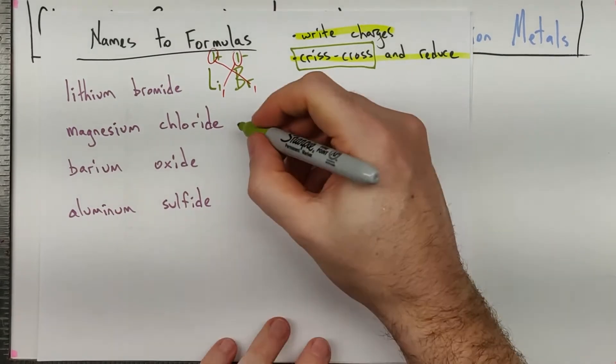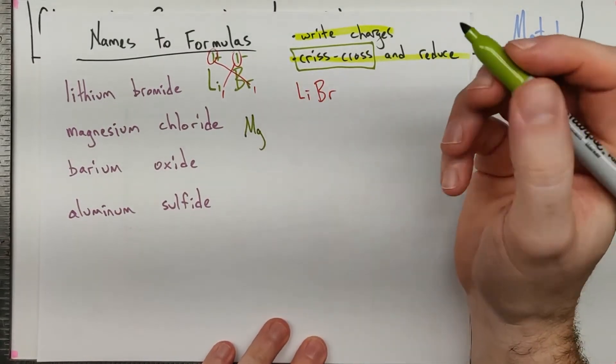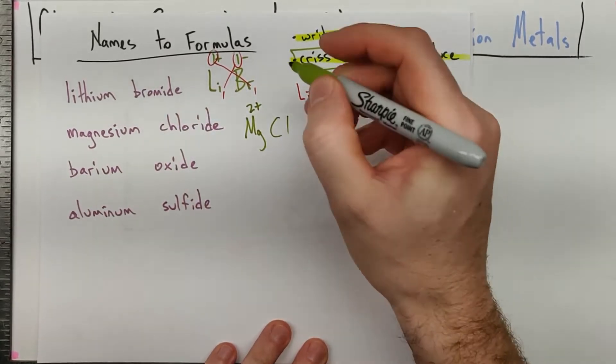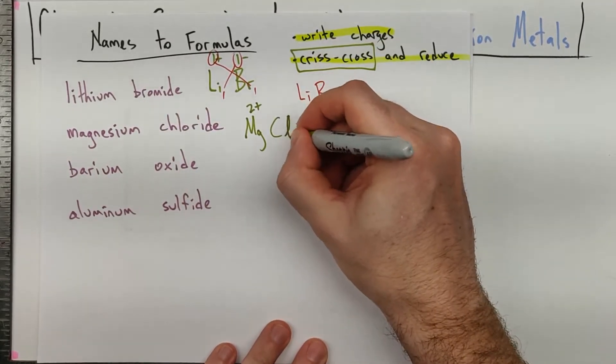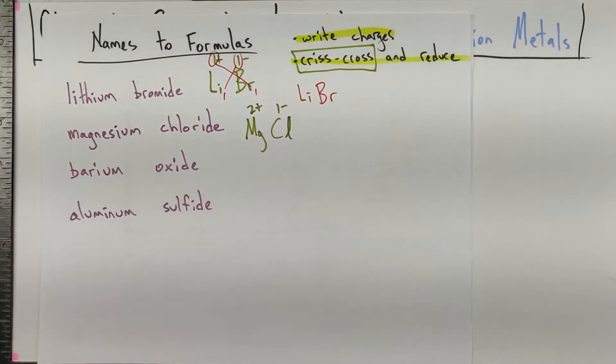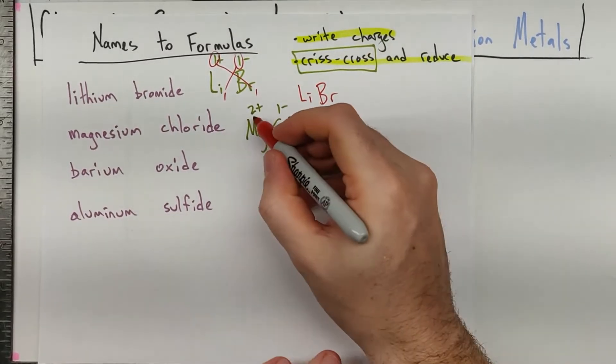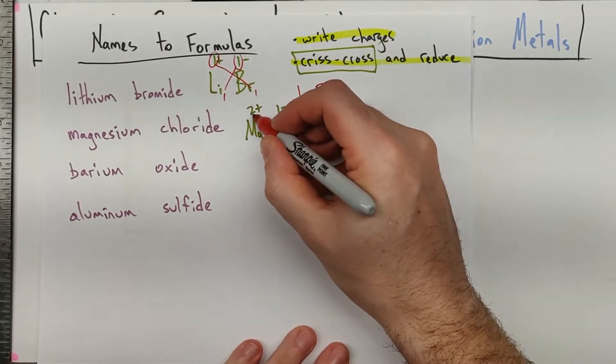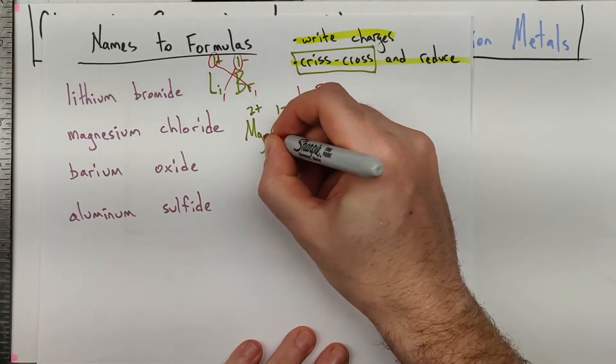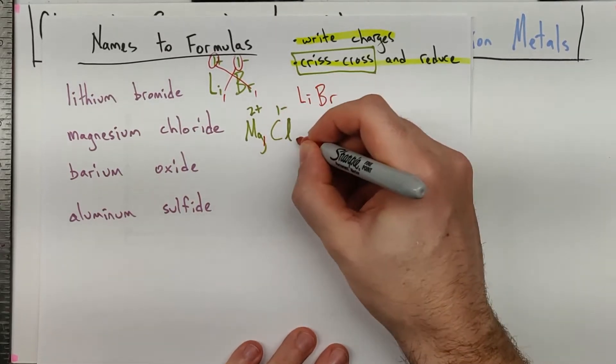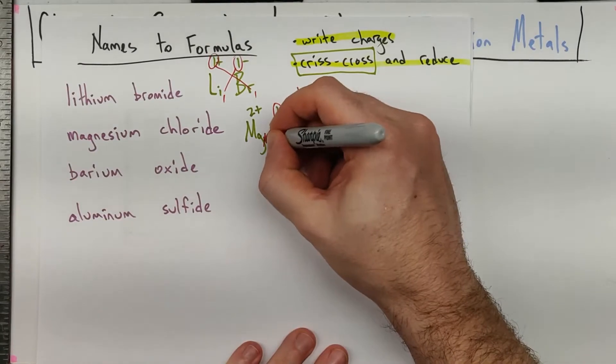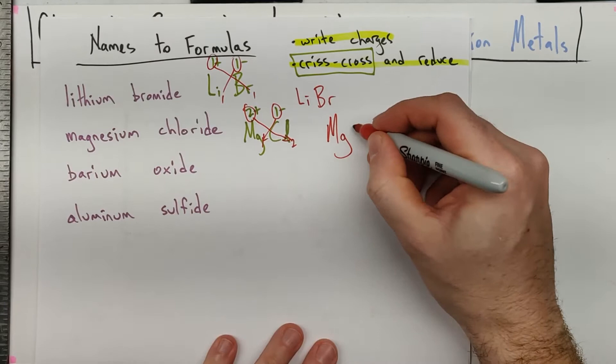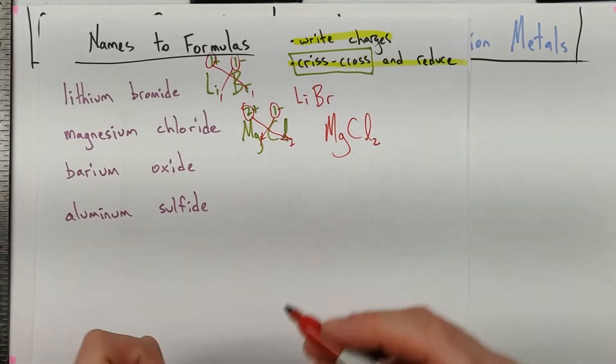Then something like magnesium chloride. We have Mg, group 2 of the periodic table is a 2 plus. Chloride from chlorine, which is group 17 of the periodic table, 1 minus. The least common multiple - what do 2 and 1 have in common? Well, 2. 2 times what is 2? A 1. And 1 times what is 2? A 2. It's much easier to just crisscross and reduce. MgCl2.